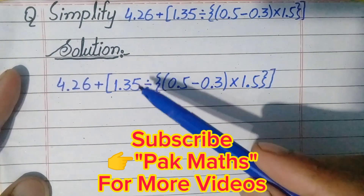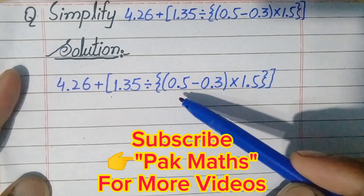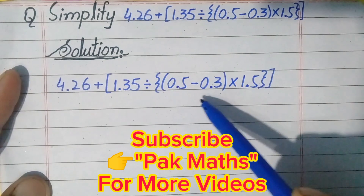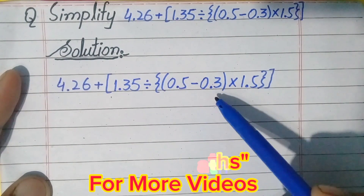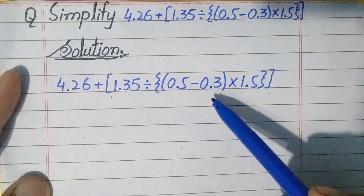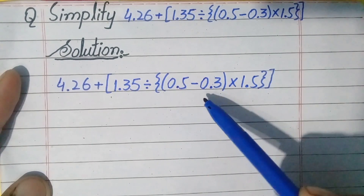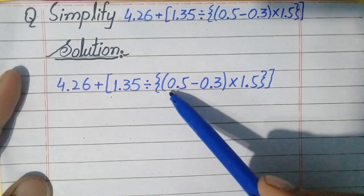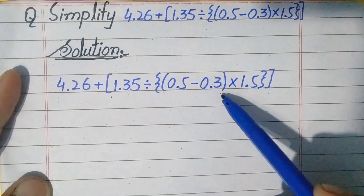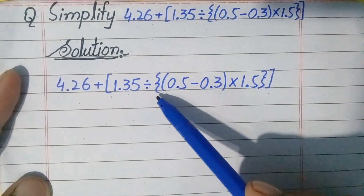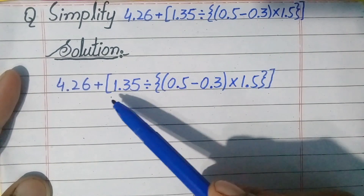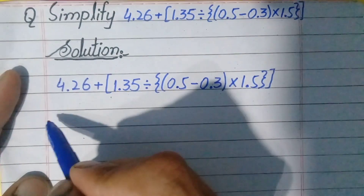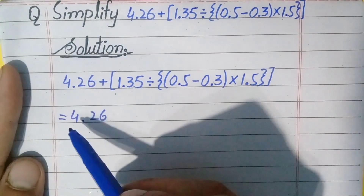First of all, we will write the solution and write this question in the solution again. As you can see, there are many operations in this question, so we will use the BODMAS rule. According to the BODMAS rule, first of all we will simplify brackets. There are three types of brackets: the first type is parentheses, the second type is braces, and the third type is square brackets. So first of all we will simplify the parentheses.